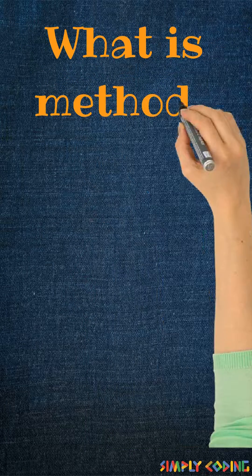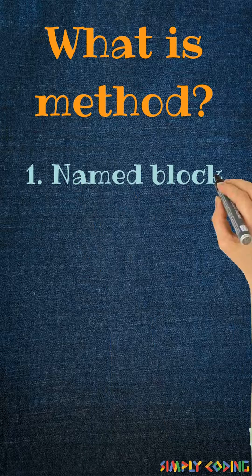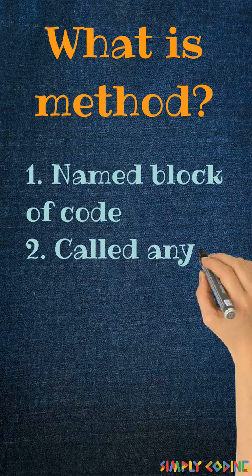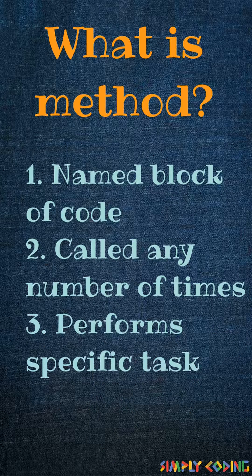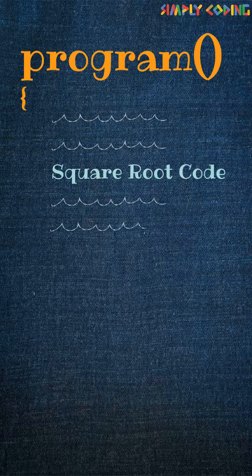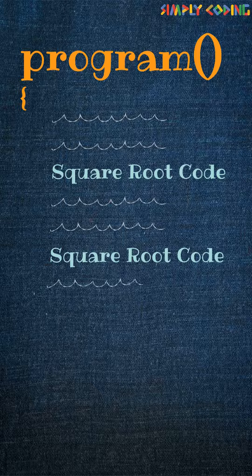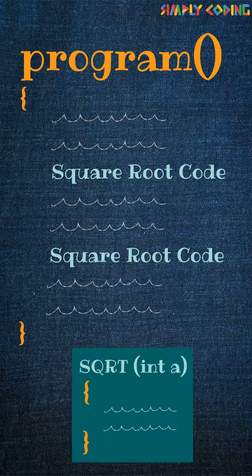So what is a method? Java methods are a named block of code, called any number of times, that perform specific tasks. For example, suppose you have a program where you need to find the square root of a number multiple times — you write a method called square root, it takes in a number as a parameter, and performs that set of tasks for you.